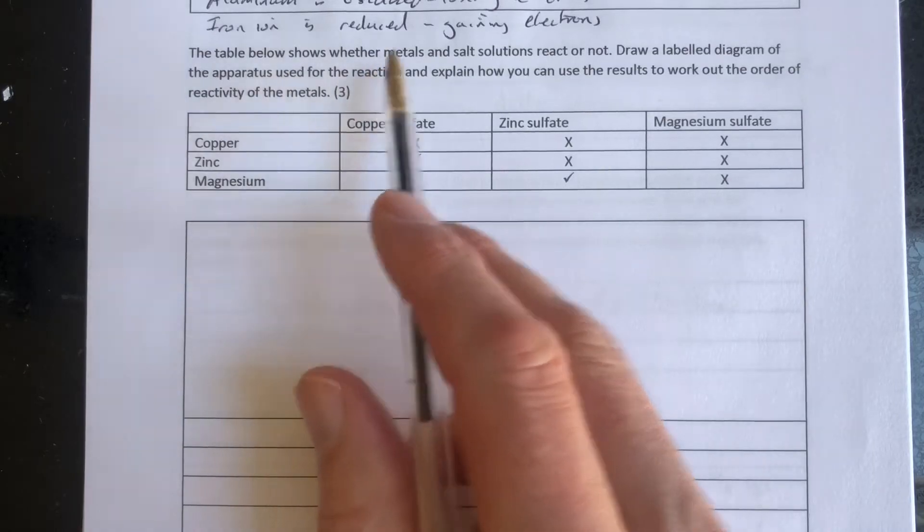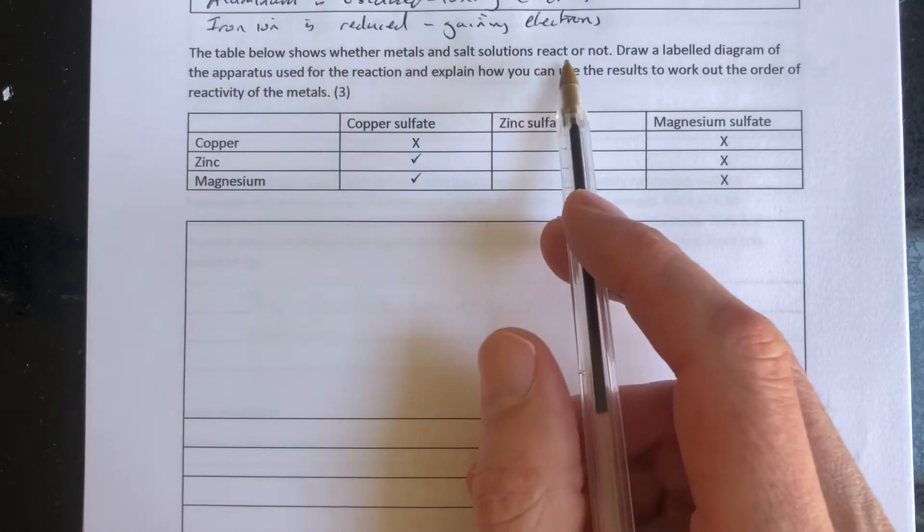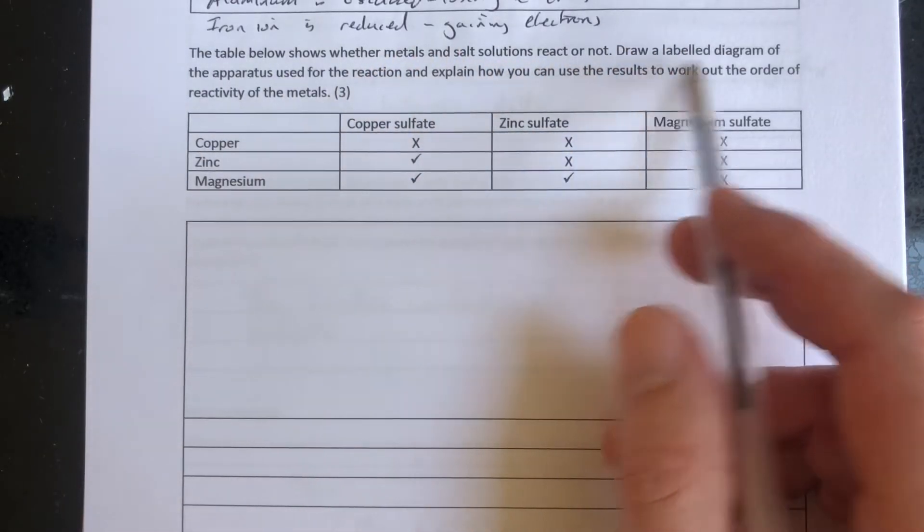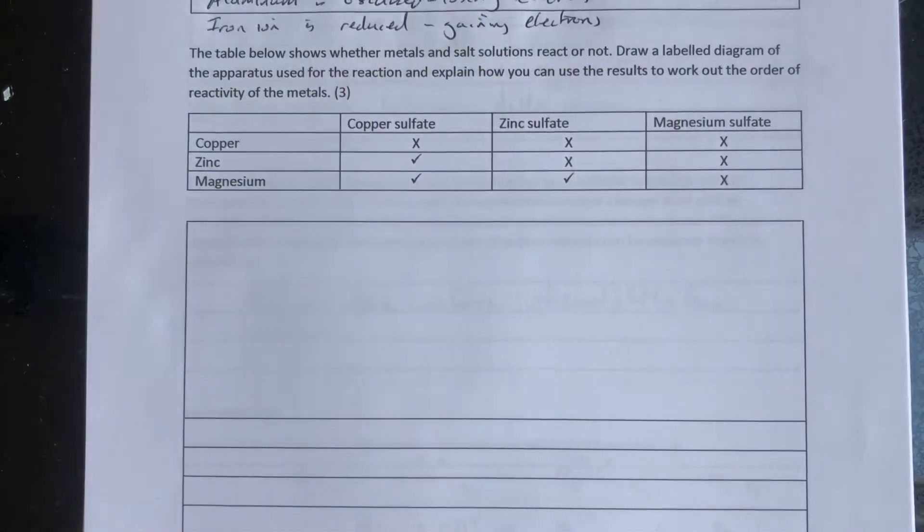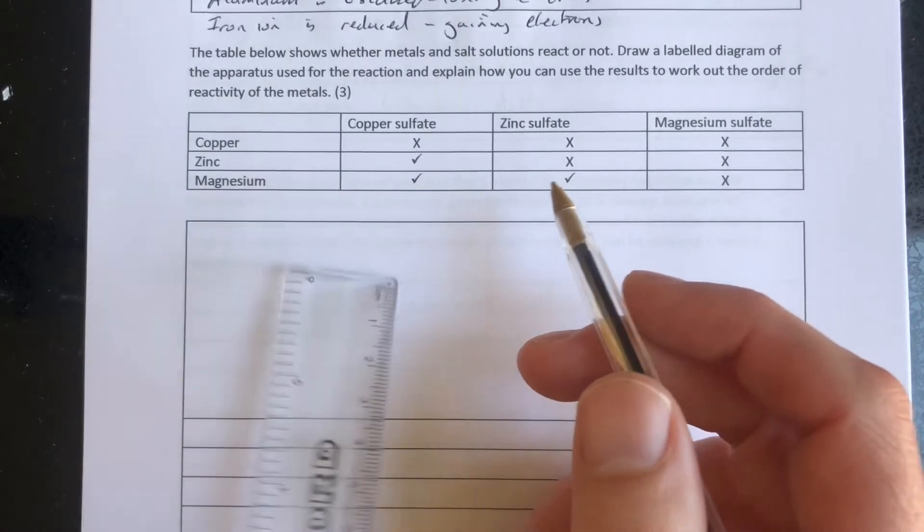A table below shows whether metals and salt solutions react or not. Draw a labeled diagram of the apparatus used for the reaction and explain how you can use the results to work out the order of reactivity of the metals.